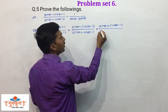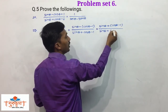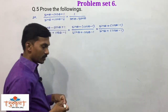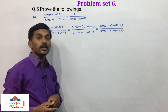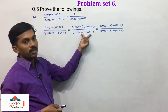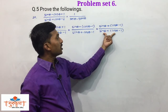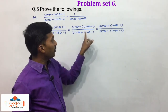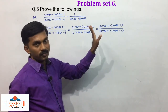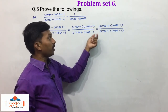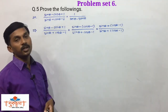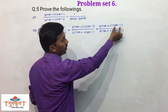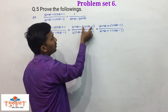We multiply the denominator also by the same term, that is (sinθ + cosθ - 1). This is a very important adjustment. We take this denominator (sinθ + cosθ - 1) and multiply both the numerator and denominator by the same number. Since the numerator is in the form (a + b)(a - b), you can multiply it as a² - b².